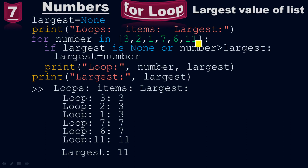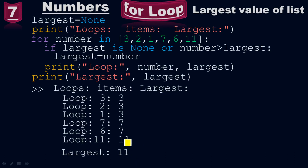From here up to here, the largest value will be 11. This part is because of the inner print function. The outermost print function comes under global scope — largest colon is because of 'largest:' inside double quotes, comma largest. Among all these values, the largest value is 11. So there we got the largest value of the list — 11 is the largest value.